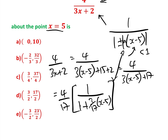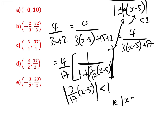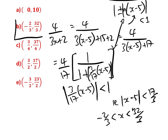All we need to do now is say the modulus of 3 seventeenths times (x minus 5) must be less than 1, i.e., mod(x minus 5) must be less than 17 over 3, i.e., the interval of convergence is x greater than minus 2 thirds and less than 32 over 3. So the answer is B, and you could probably do that in 10 seconds in your head.